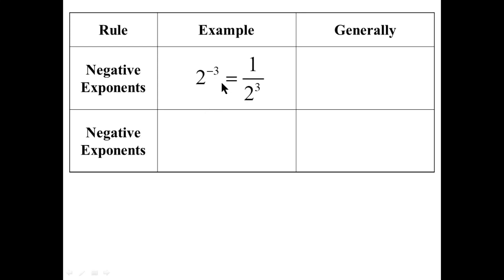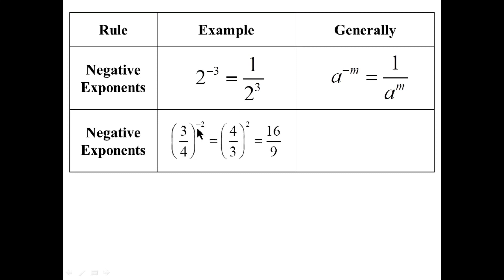Negative exponents: two to the minus three equals one over two to the three. Notice the answer is not negative — it's still positive. The negative sign inverts the base: it makes it one over two to the exponent three. In general, a to the negative m is one over a to the positive m. Another example: three-quarters to the negative two — the negative sign inverts the base to four over three to the positive two, giving four squared over three squared. In general, a over b to the negative n means invert the base.